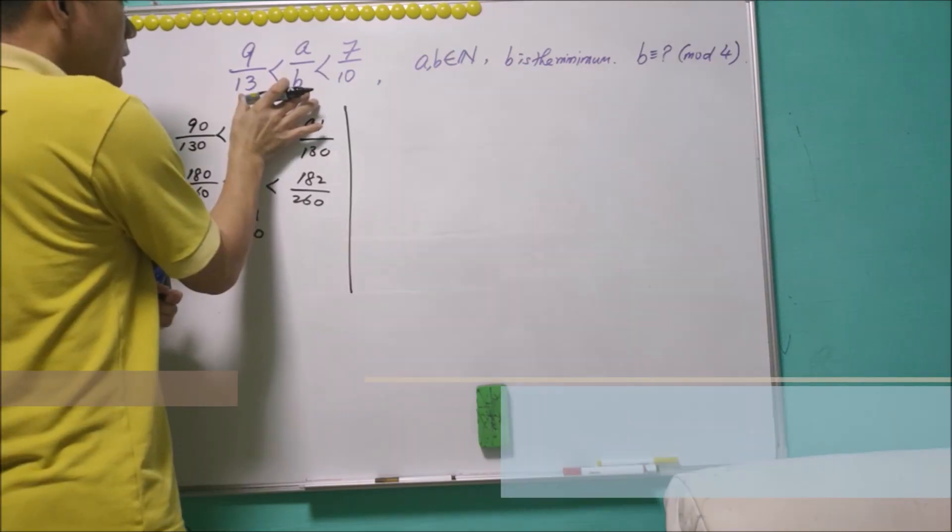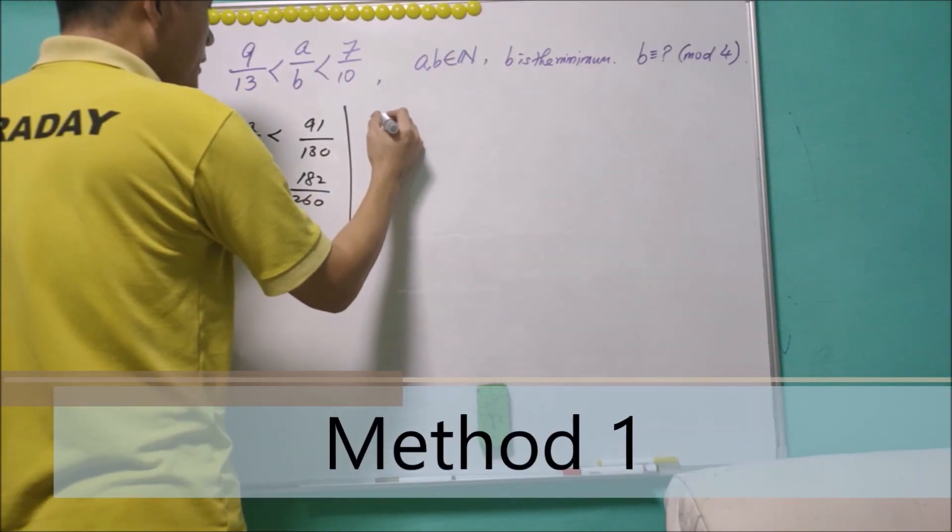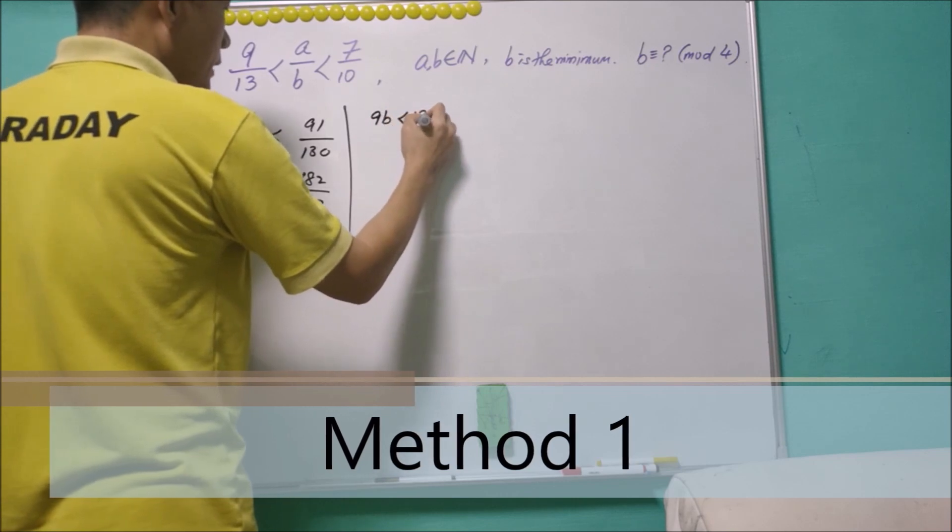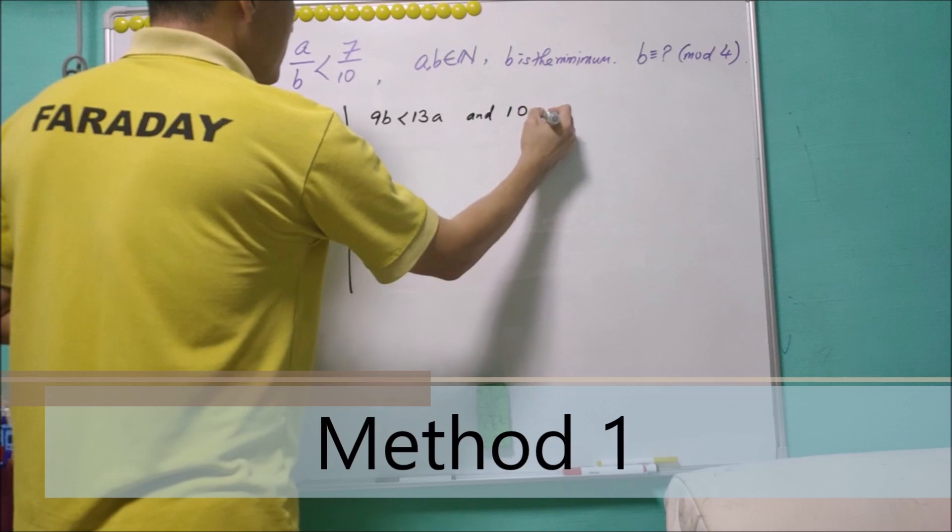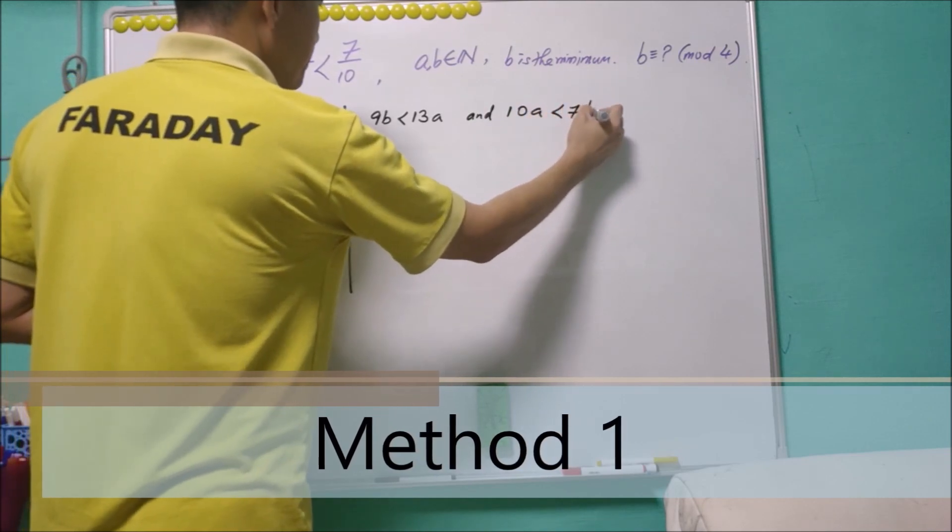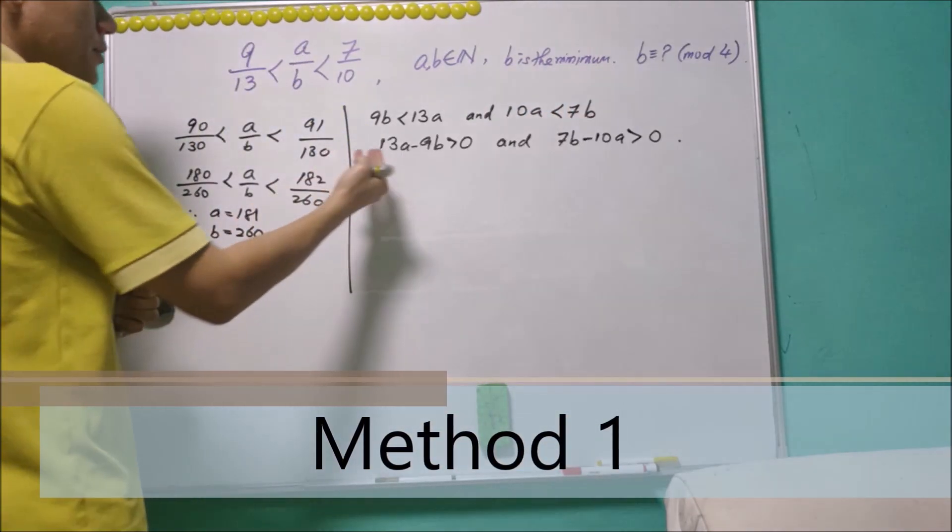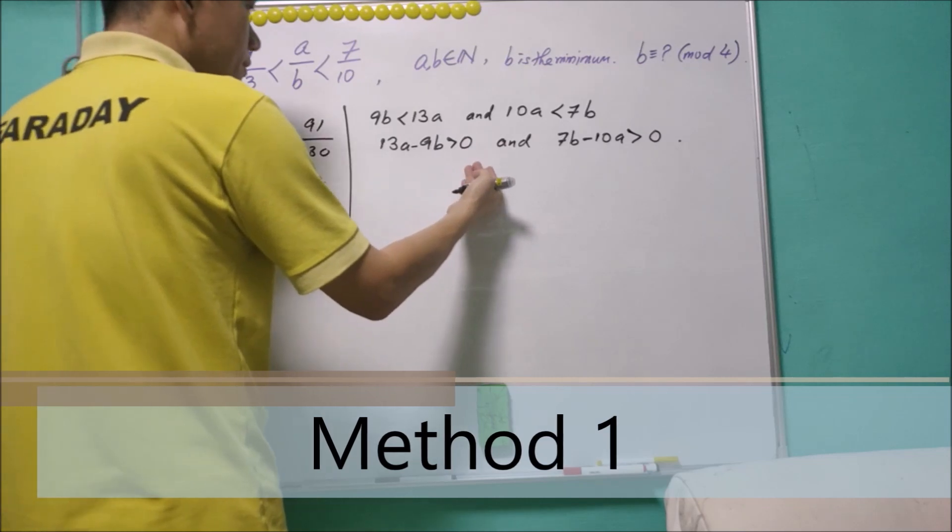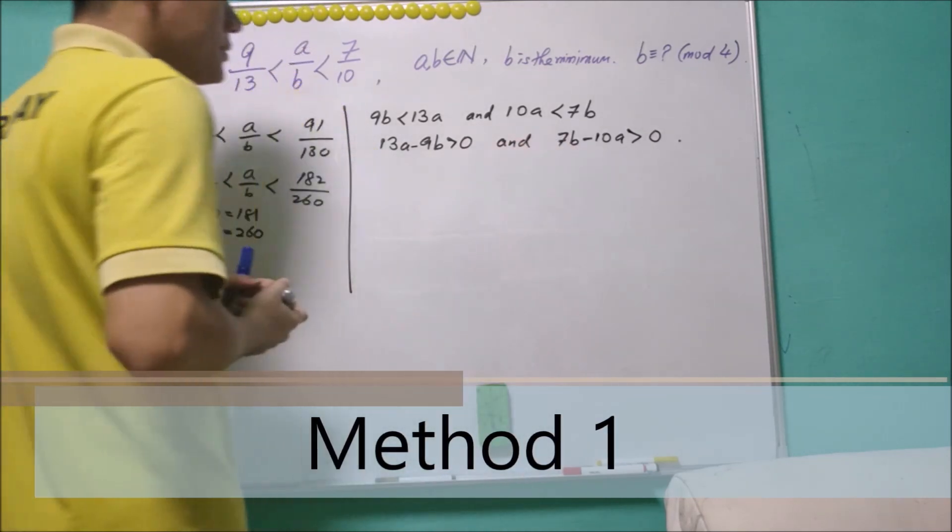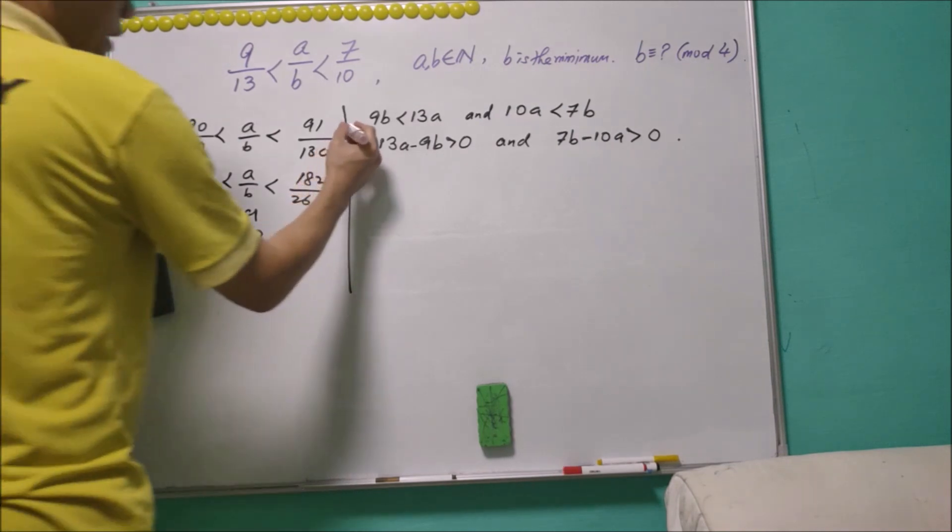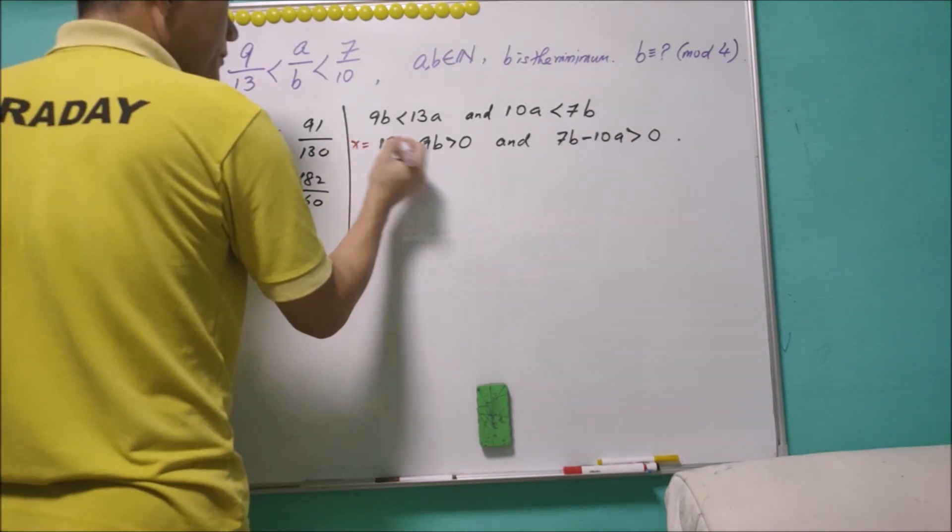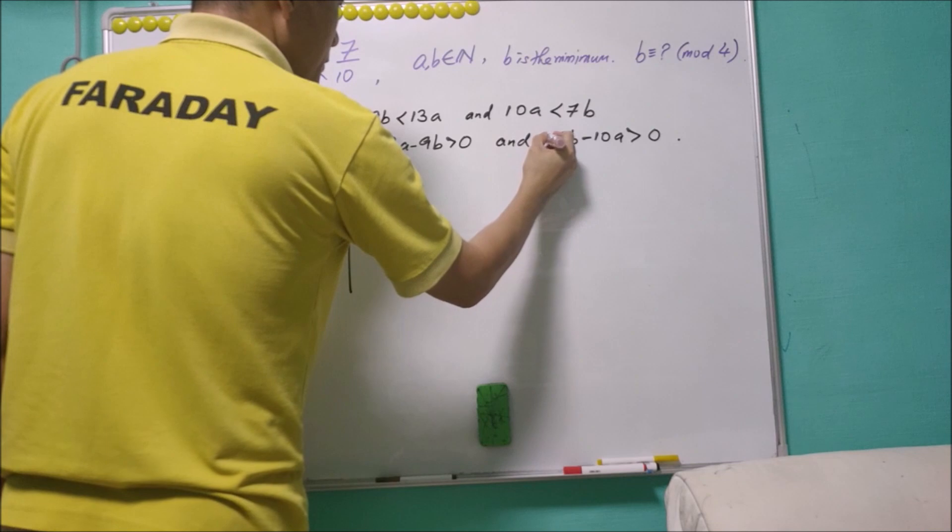From the inequality we know that 9b < 13a and 10a < 7b. Therefore 13a - 9b > 0 and 7b - 10a > 0. Now we let this to be equal to x and this to be equal to y.